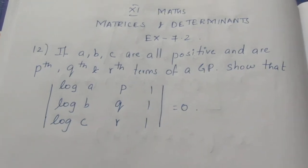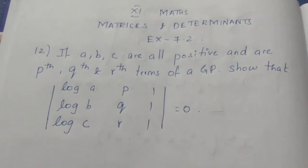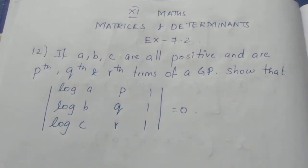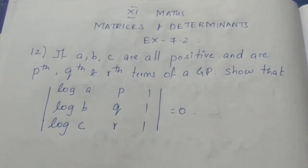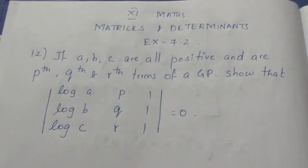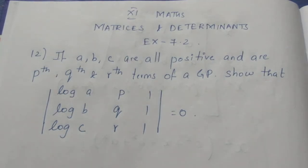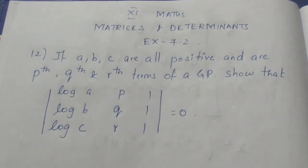Hello viewers, I am Aitli. In the 11th and 12th matrices and determinants, exercise 7.2, we will work on the following question: If A, B, C are all positive and are the Pth, Qth, and Rth terms of a GP, show that